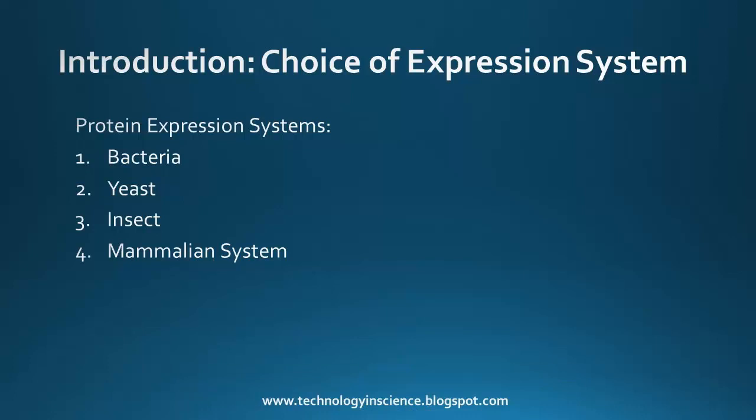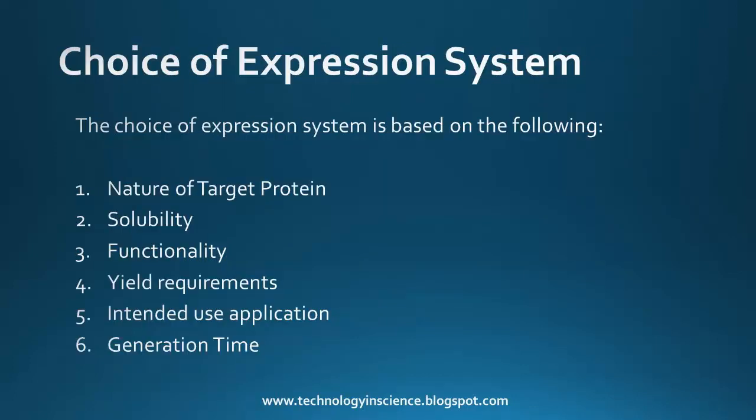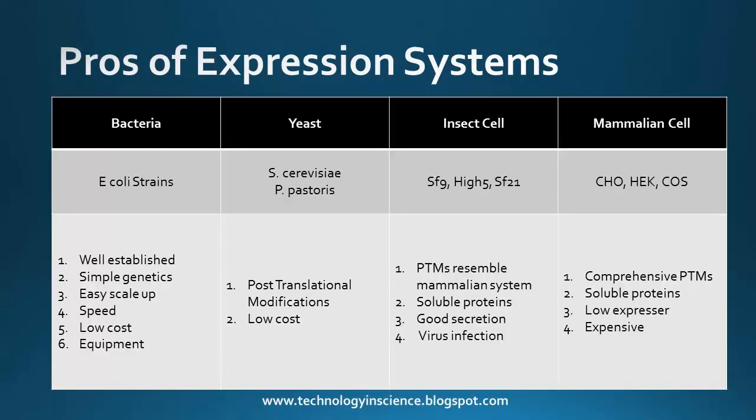Before going into the details of the baculovirus expression system, let's look at the available expression systems for the production of proteins and their advantages and limitations. The available protein expression systems are bacteria, yeast, insect, and mammalian systems. Each of these has their own advantages and disadvantages.